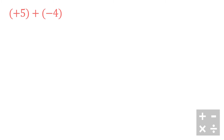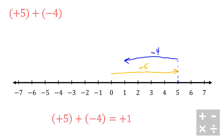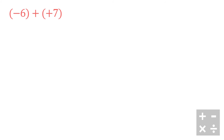Now we're going to mix positives and negatives. Let's look at positive five plus negative four. I start at zero, go positive five spaces — one, two, three, four, five — then from that spot I go negative four: one, two, three, four. You'll notice I end up at positive one, which is exactly what positive five plus negative four equals.